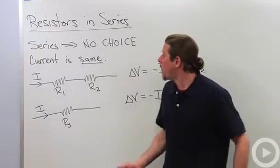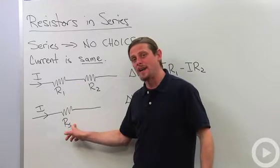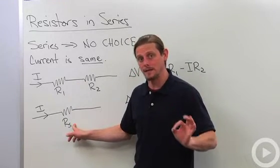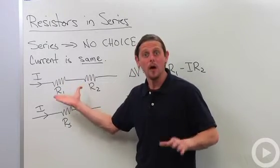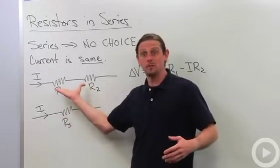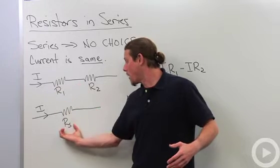All right, so what does that mean? Well what we're going to try to do is we're going to try to find an effective resistance that plays the role of this whole network. Both of these together and we're going to say, all right, instead of writing two separate resistors, I want to write just one.